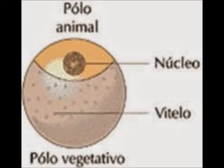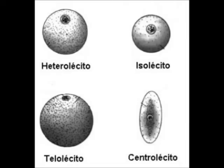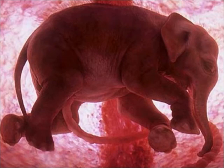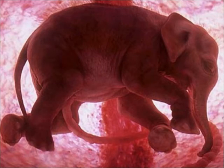The animal pole is the area where the male and female nuclei unite, and the vegetative pole is the opposite, where vitellus tends to accumulate. Telolecithal eggs have a lot of vitellus of heterogeneous density — the case of birds, reptiles, and fish — where the young and adults are very similar and only grow in size. Centrolecithal eggs have vitellus around the nucleus in a homogenous arrangement, as in insects. Those with less vitellus create a connection with the mother to be nourished, like echinoderms or chordates such as humans.